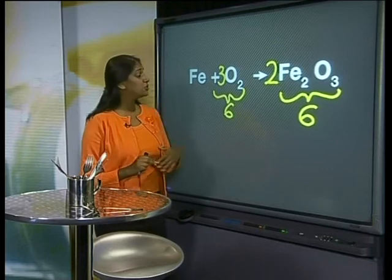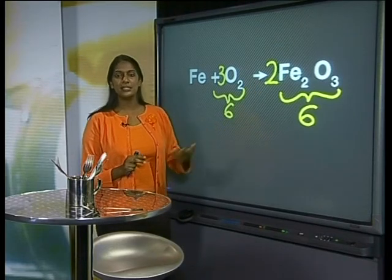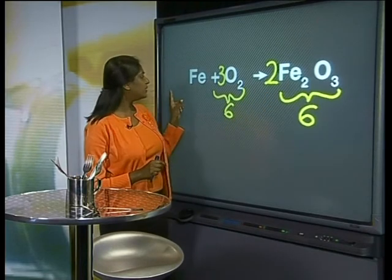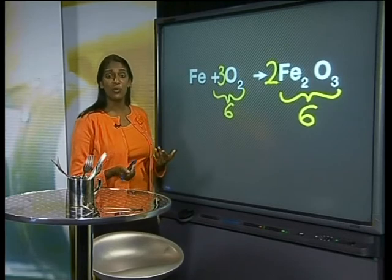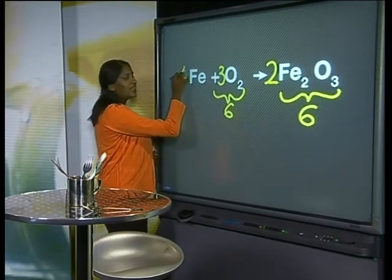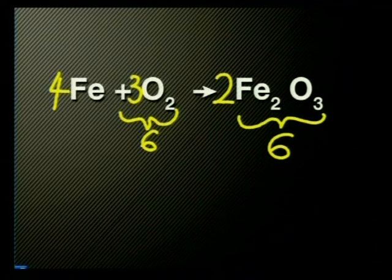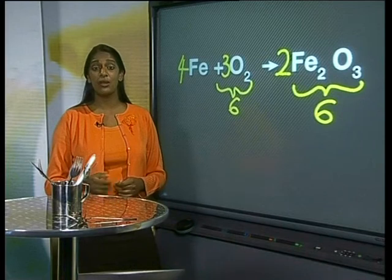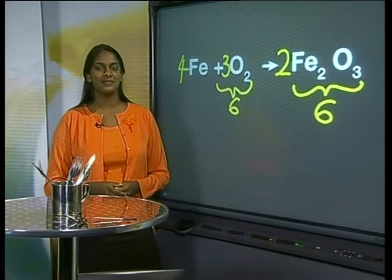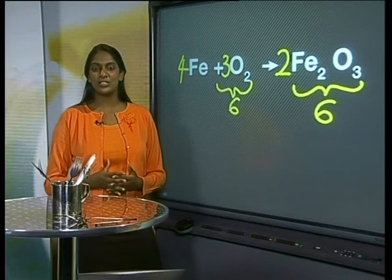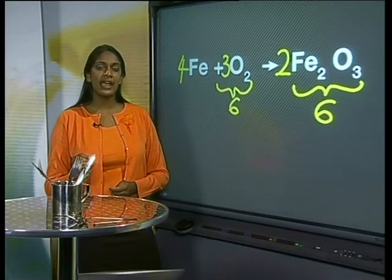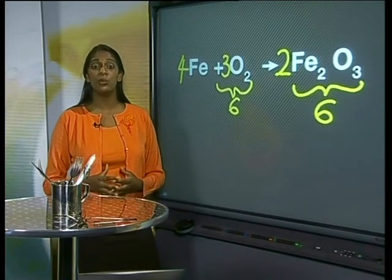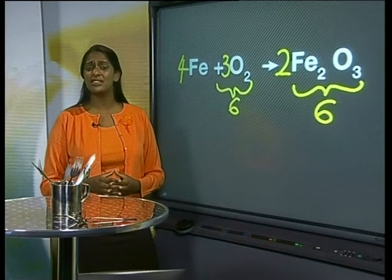Now, finally, I need to balance the iron. I have 4 atoms — 2 times 2 — on the right and only 1 on the left. I write a 4 in front of Fe and the equation is balanced: 4Fe + 3O₂ → 2Fe₂O₃. Even though transition metals are not very reactive, they still do combine with oxygen. Whenever these transition elements are exposed to air, a slow reaction takes place. The end result is that the original metal is corroded away and we are left with a useless pile of metal oxide.